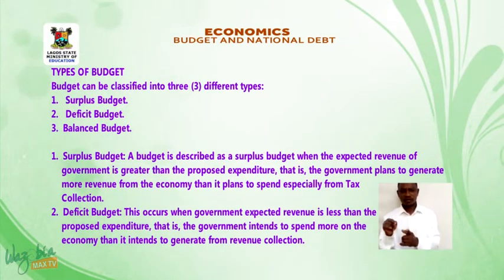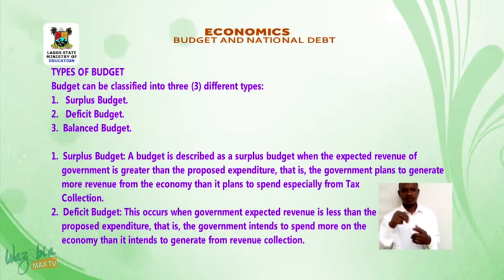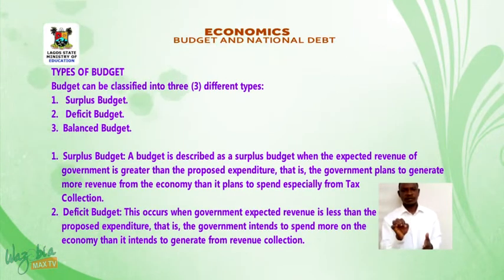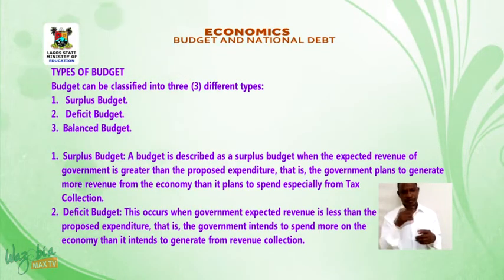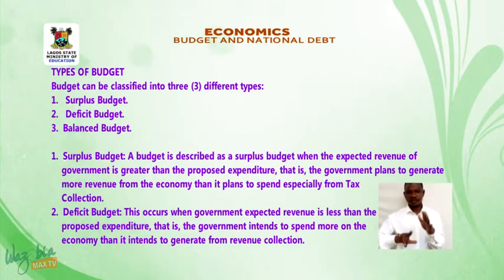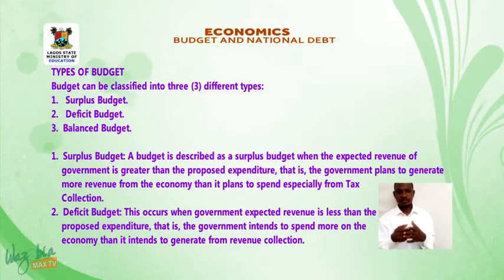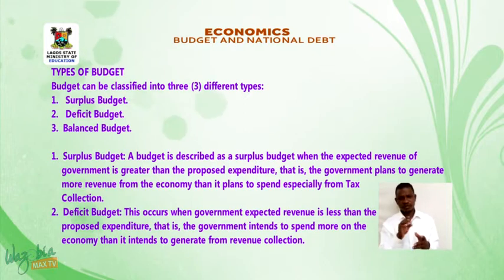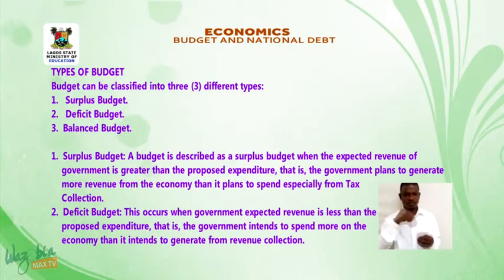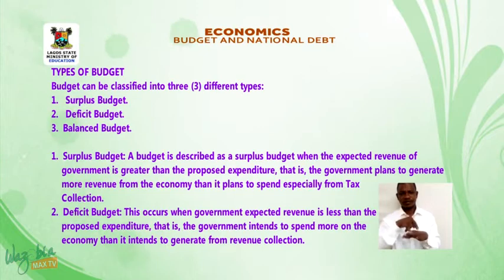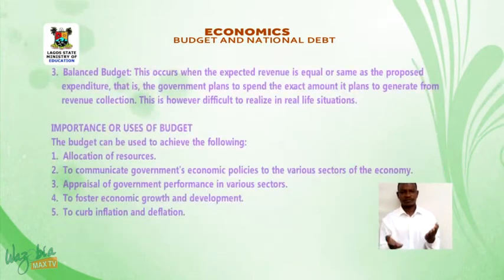That is, the government plans to generate more revenue from the economy than it plans to spend, especially from tax collection. Deficit budget: This occurs when the government's expected revenue is less than the proposed expenditure — that is, the government intends to spend more on the economy than it intends to generate from revenue collection.